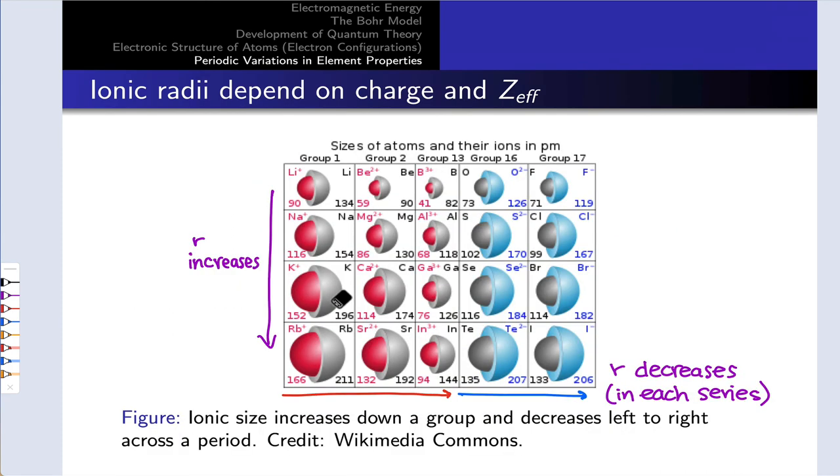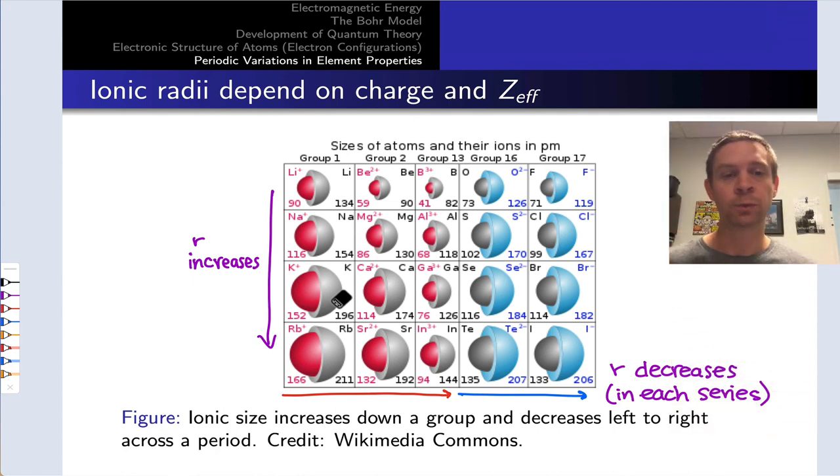So ionic radii are going to depend on the charge in the way we just saw in the last slide, but also on Z-effective. Moving down a group, ionic radius increases just like atomic radius, more layers to the onion for the exact same reason. When we look left to right, we have to be careful about charge.